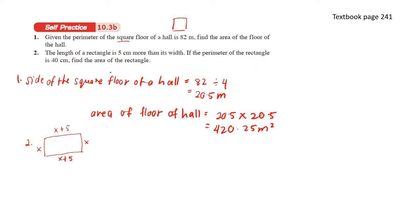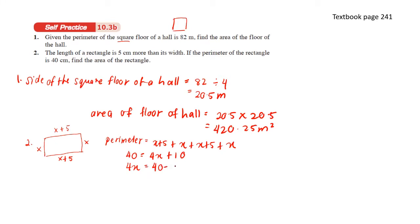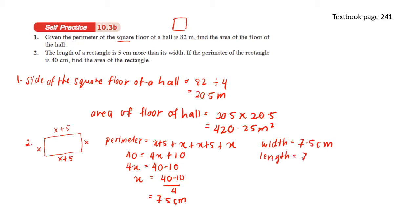If the perimeter of the rectangle is 40 centimeters, let's find x. Perimeter equals x plus 5 plus x plus x plus 5 plus x. We know the perimeter is 40, and simplifying gives us 4x plus 10. Rearranging gives 4x equals 40 minus 10, so x equals 30 divided by 4, which is 7.5 centimeters. So the width is 7.5 cm and the length is 7.5 plus 5, which equals 12.5 cm.